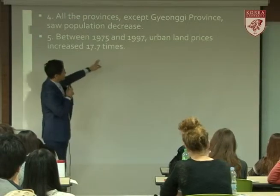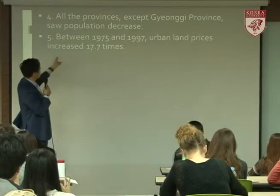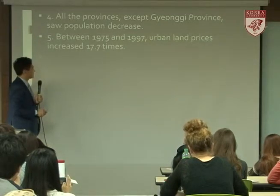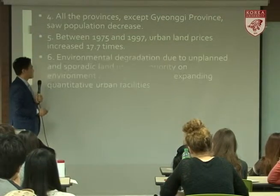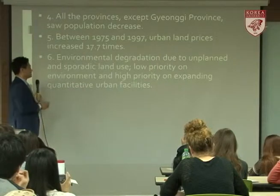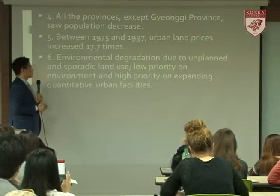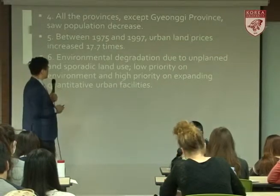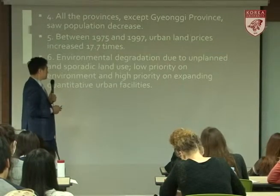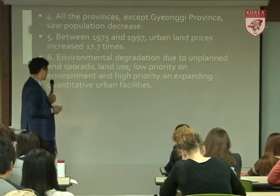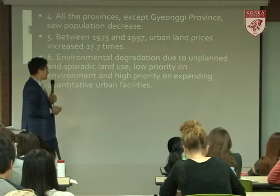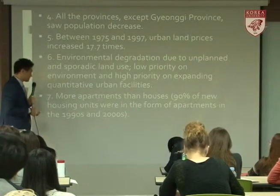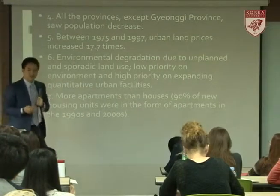Between 1975 and 1997, urban land prices increased about 18 times — we'll come back to that when we talk about Seoul. There has been environmental degradation due to unplanned and sporadic land use, low priority on environment, and high priority on expanding quantitative urban facilities — more apartments than houses.